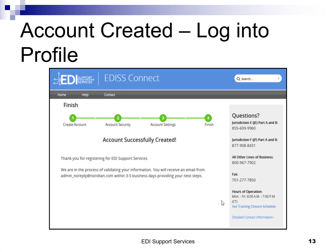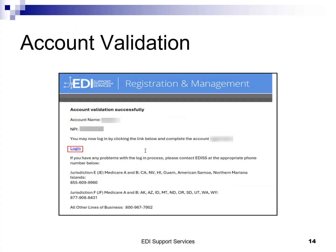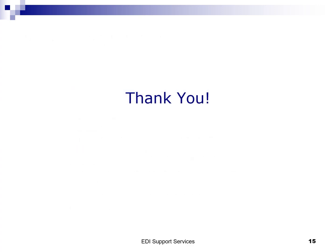You have completed part one of your EDI registration. Your account will now go through a validation process. You'll receive an email from admin_noreply@neridian.com within three to five business days with a link to log into your EDI-SS Connect account. This is an example of what the email will look like once the account has been validated. When you receive this email, you will then proceed to part two of the registration. Thank you for viewing the EDI-SS Connect New Provider Registration Part 1 Tutorial.